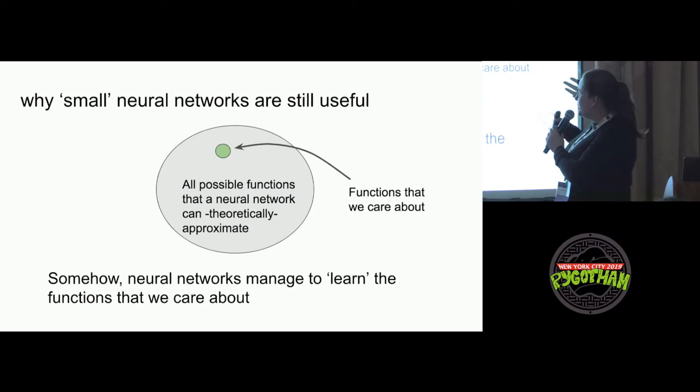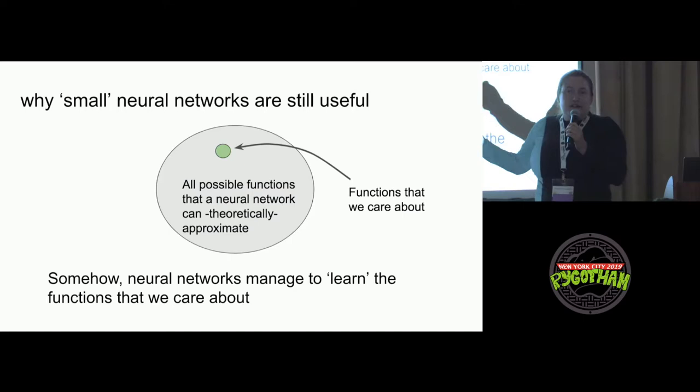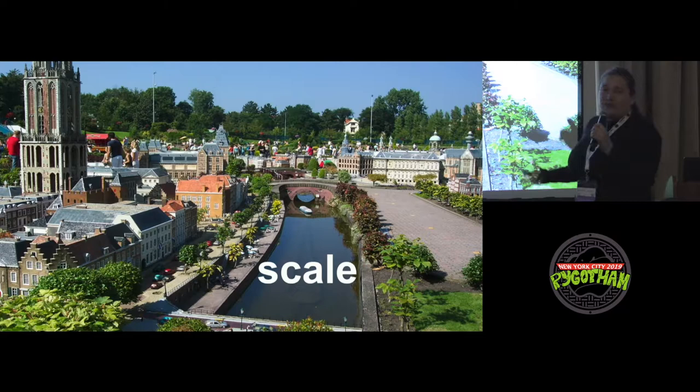The reason probably is, if you have all these possible functions, these many functions that you can approximate, maybe it's only a tiny number of functions that we actually care about. And then the question becomes, how do neural networks manage to learn actually functions that are what we care about?